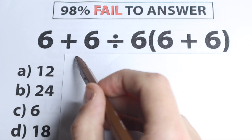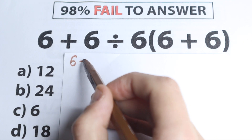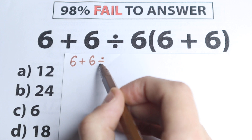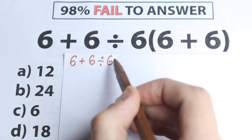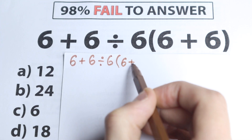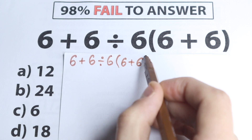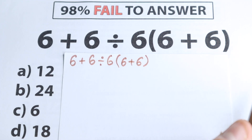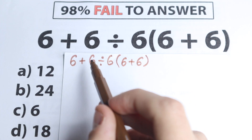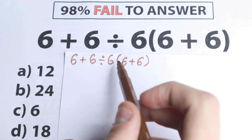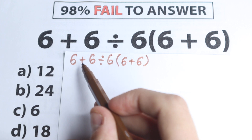So we have 6 plus 6 divided by 6, times 6 plus 6 in parentheses — it's like a challenge, we have all the time 6. But here is our main question: what do we need to start with? We have addition, division, multiplication — so what do we need to start with?